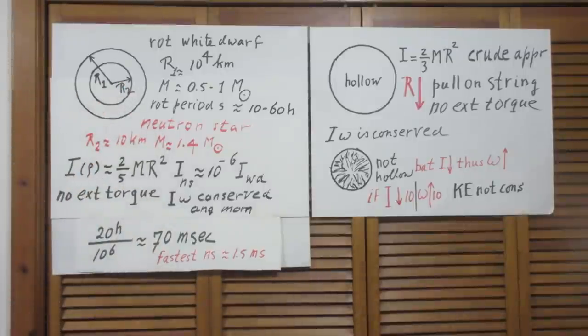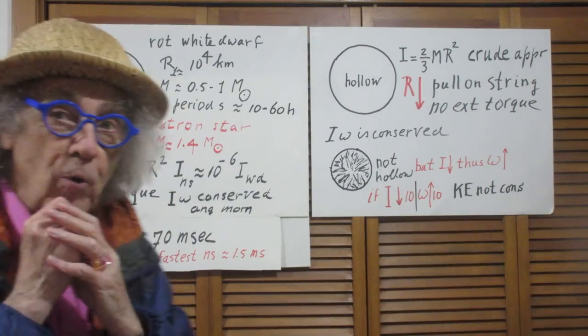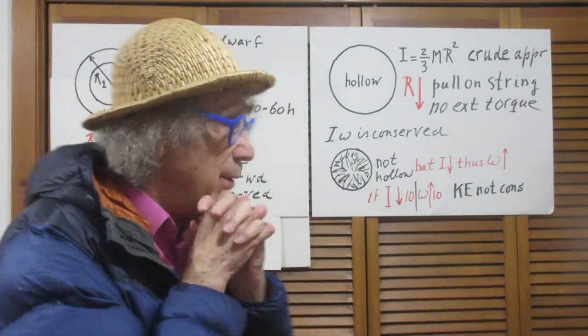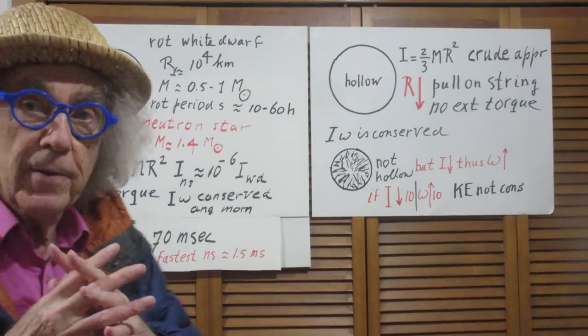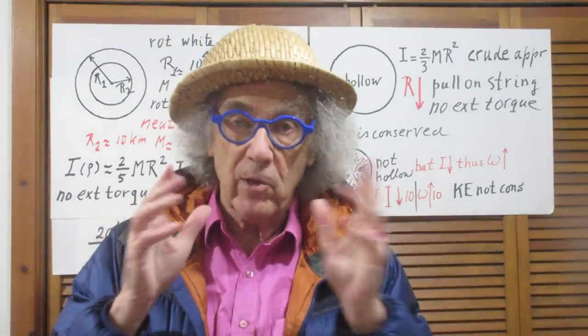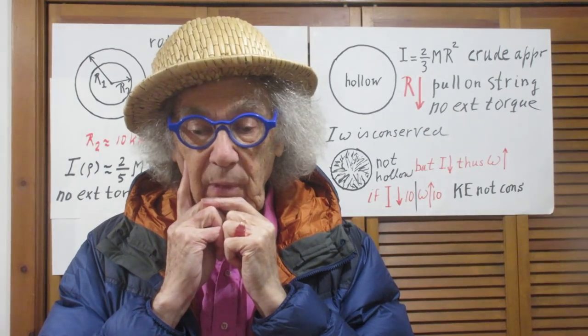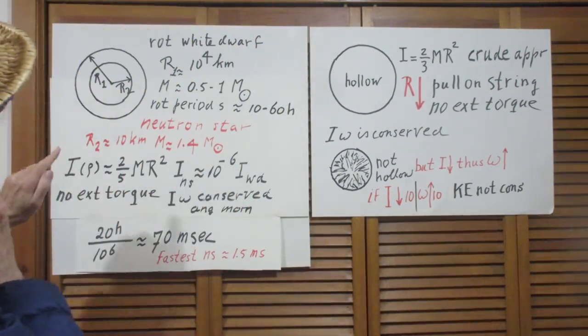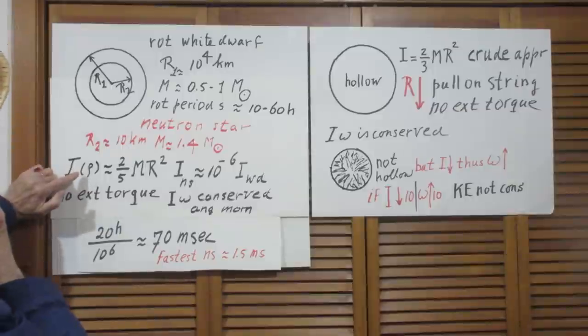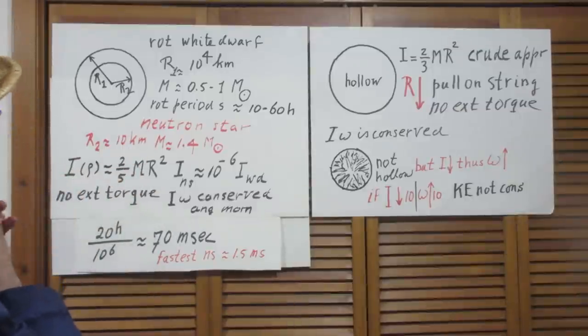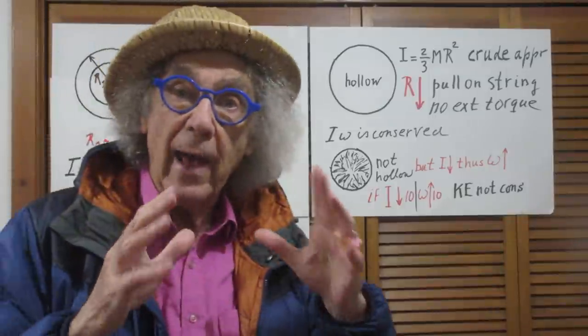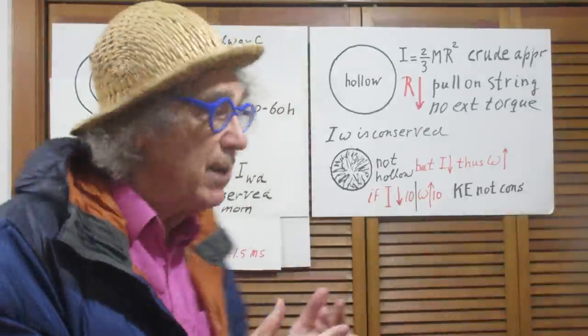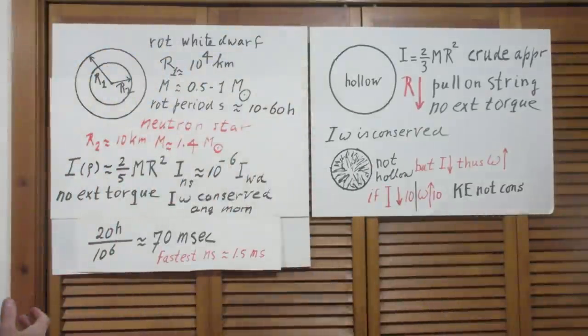And the mass is about 1.4 solar mass, which is the Chandrasekhar limit. If we assume that the density of the white dwarf is the same everywhere, then the moment of inertia is two-fifths MR². I put this rho here to remind you that it's only accurate if the density is the same everywhere.